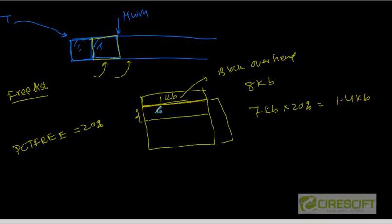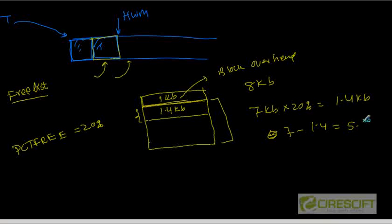So that means I am going to leave 1.4 kilobytes empty — unused. So if I am going to insert to this block, I am going to insert up to 5.6 kilobytes of data. So 5.6 kilobytes worth of data is going to reside in this block, and 1.4 kilobytes remains empty. After that, if you look at this block, this block is going to fill up to that point.